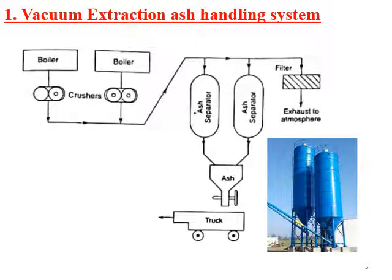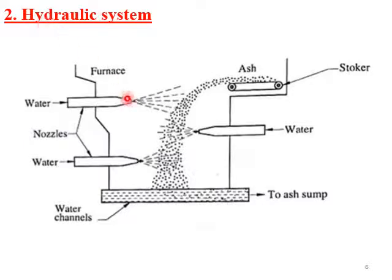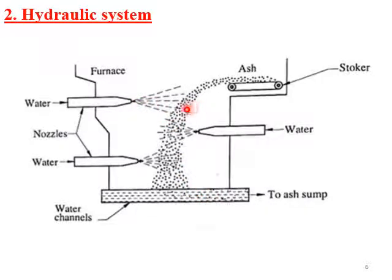The first method is the vacuum system — creating a vacuum using airspeed. The second method is the hydraulic system, where water is sprayed into the furnace. The bottom ash and water mix to form a slurry, which flows through water channels and is then stored.